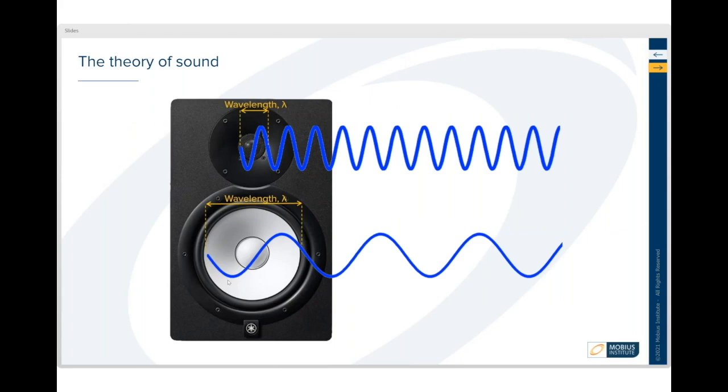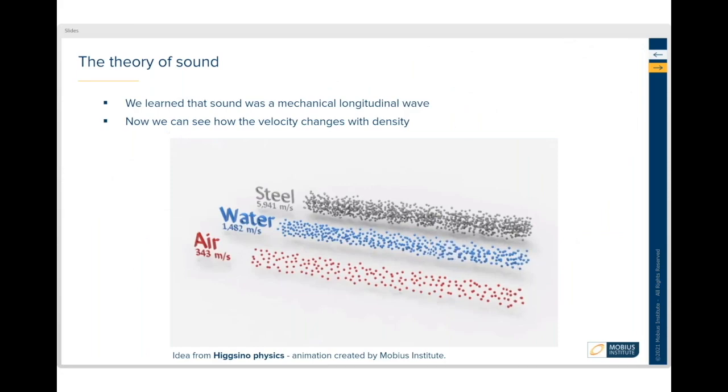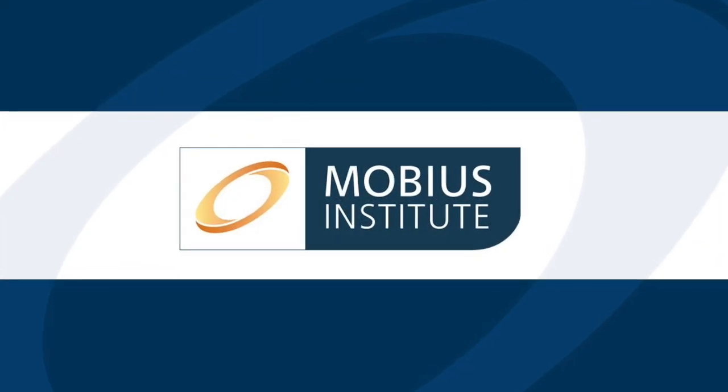We can look at the actual molecules, and if you can see the movement in the molecules here versus how quickly they move in steel and water - it's all about the density of the material.